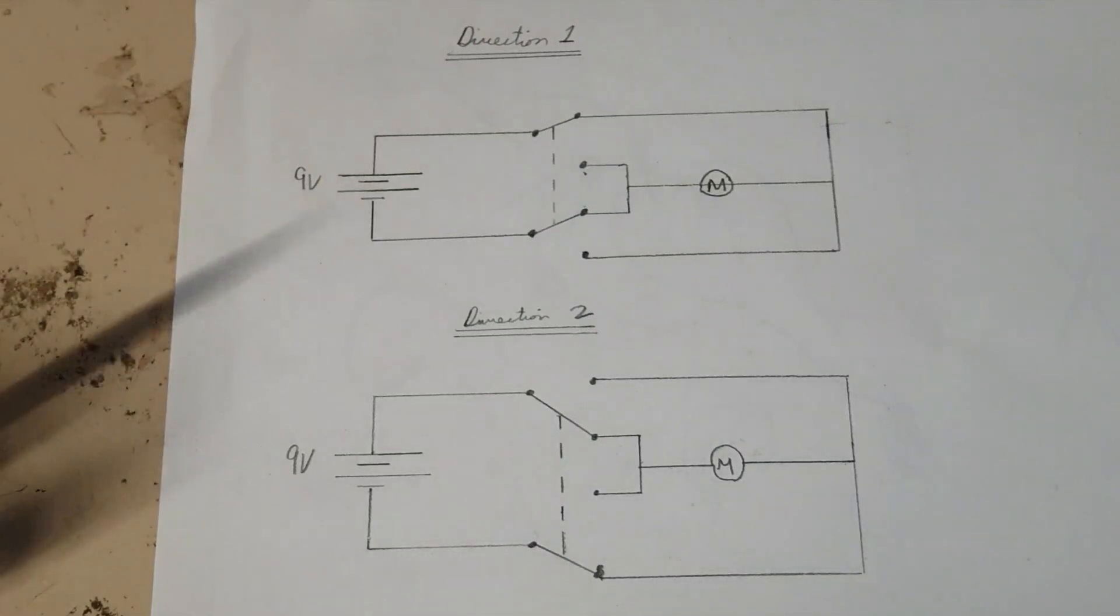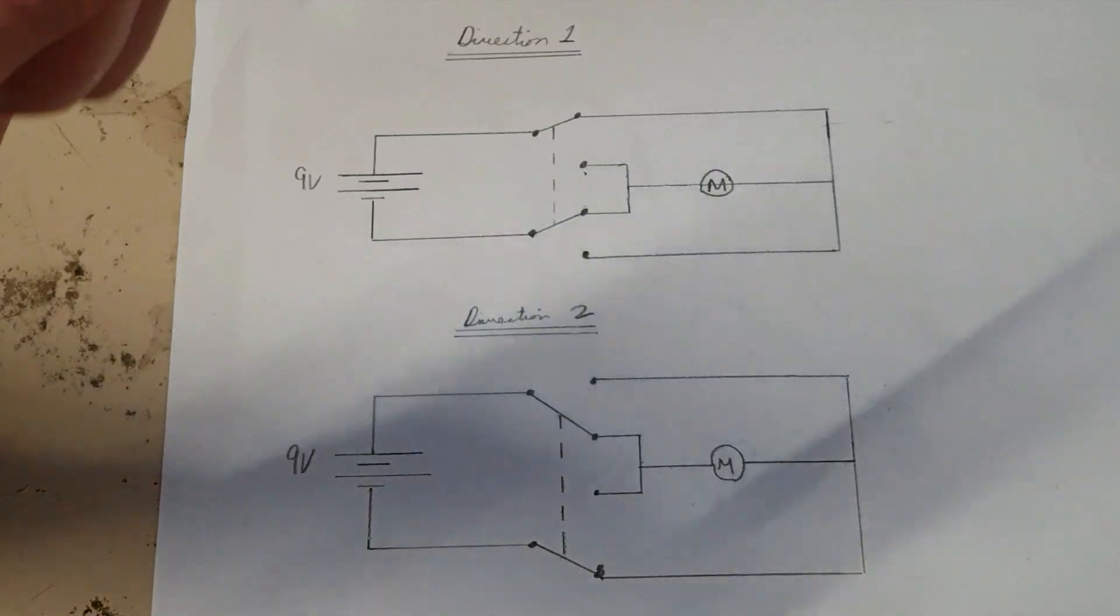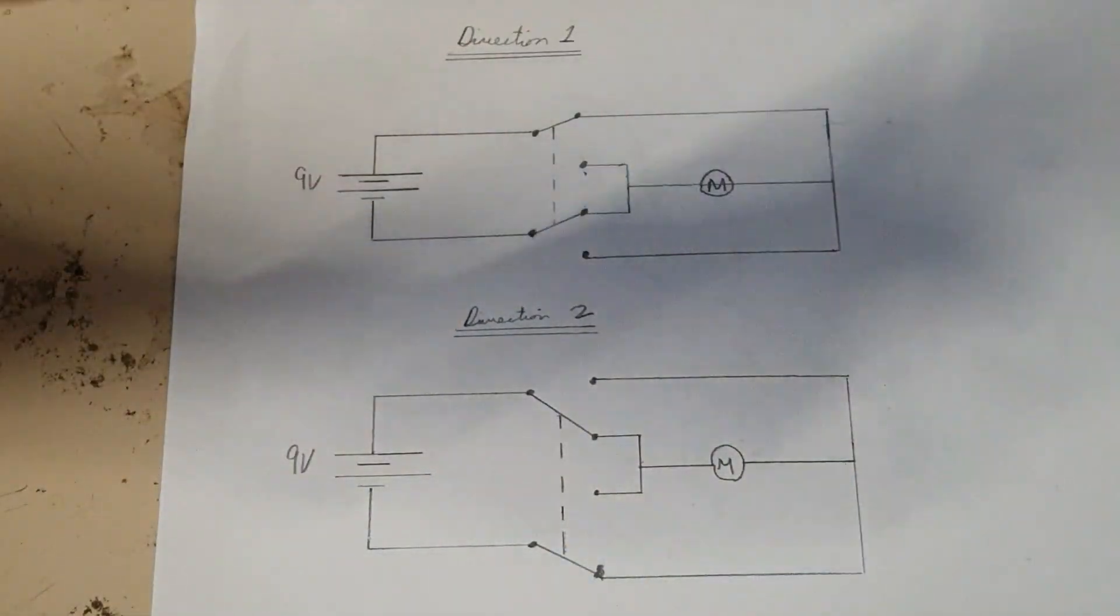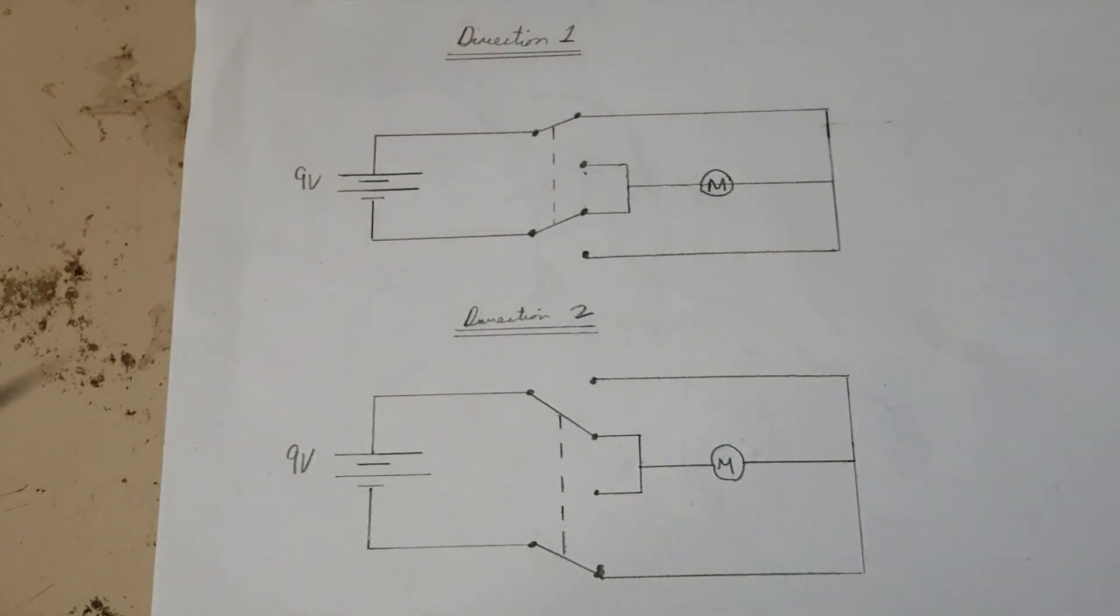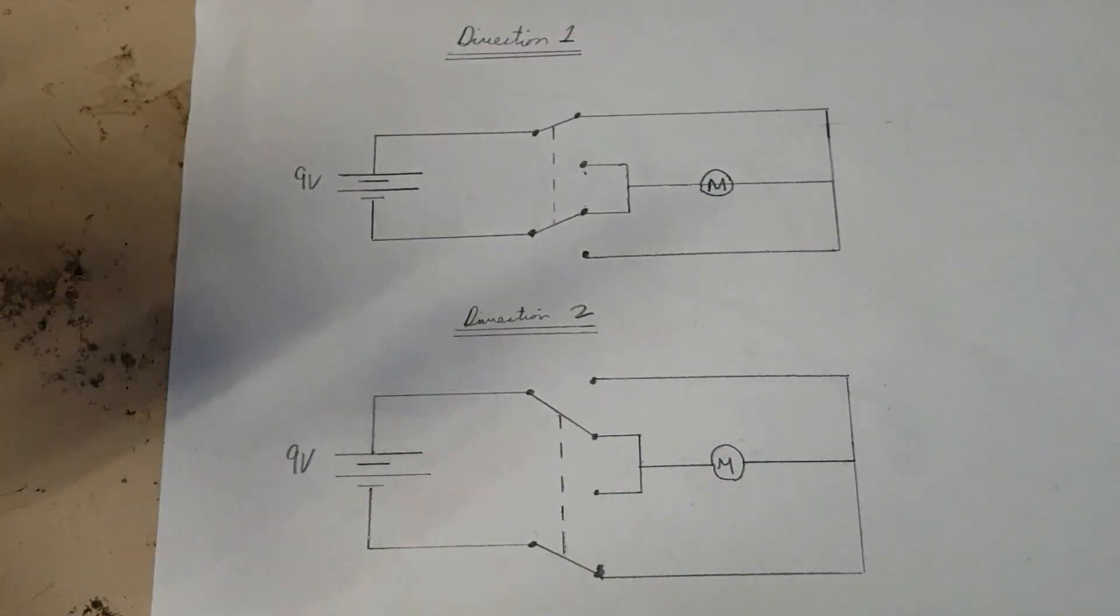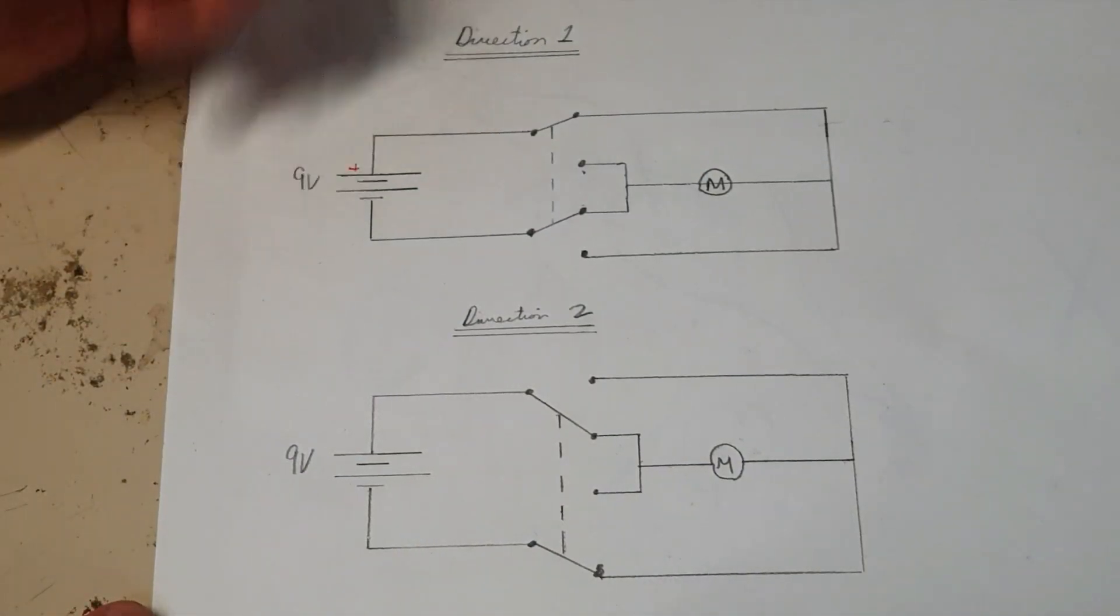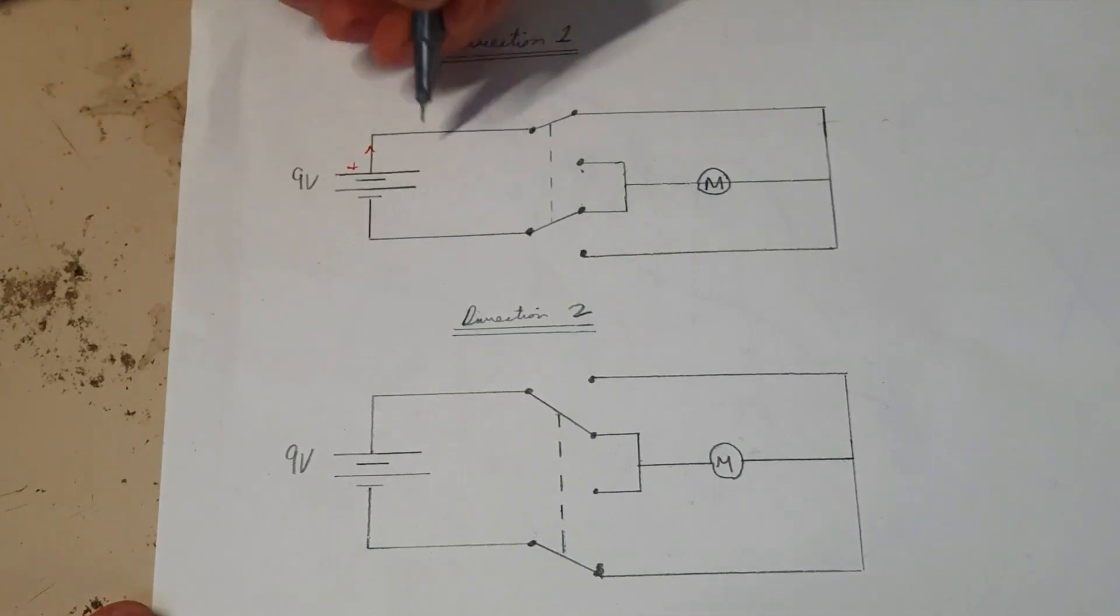When I placed the battery with the power positive going through one side of the motor, it went one way. When I swapped it around, it went the other way. And this is the principle of how the double pole, double throw switch works. It's basically just directing the current through the motor in both directions. So if we look at direction one here, we've got our nine volt battery with our positive side here. So let's just track how the current flows.